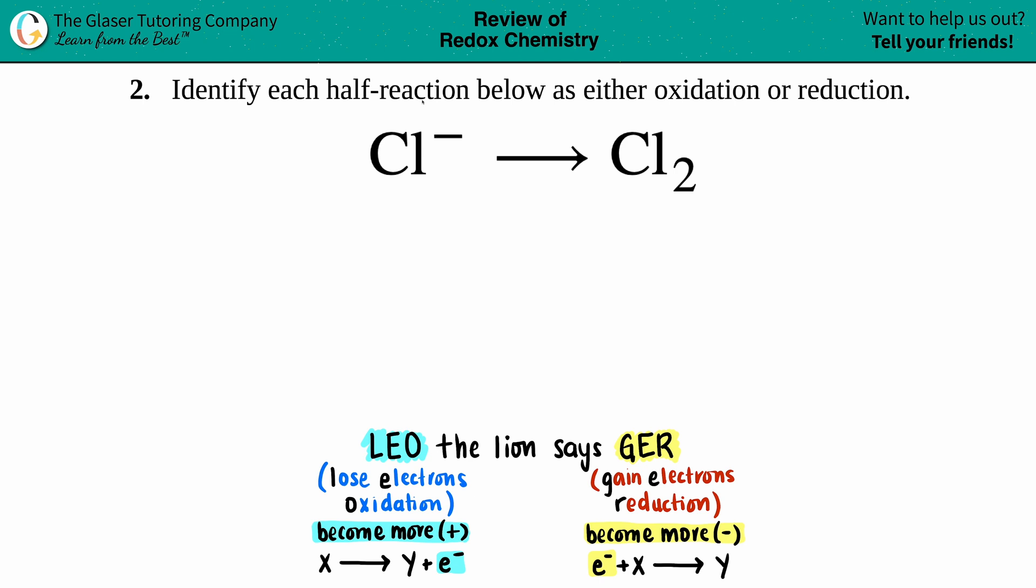Number two: identify each half-reaction below as either oxidation or reduction. We have Cl⁻ which will yield Cl₂. Now whenever you're dealing with oxidation or reduction, or if you're dealing with redox...